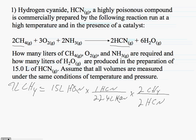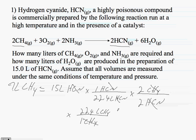Now we've converted liters of HCN into moles of CH4, but we want our answer in liters of CH4. So we use one more conversion factor: for every one mole of CH4, we have 22.4 liters of CH4. Moles of CH4 cancel out, moles of HCN cancel out, and when we do the calculation, this gives us 15 liters of methane.